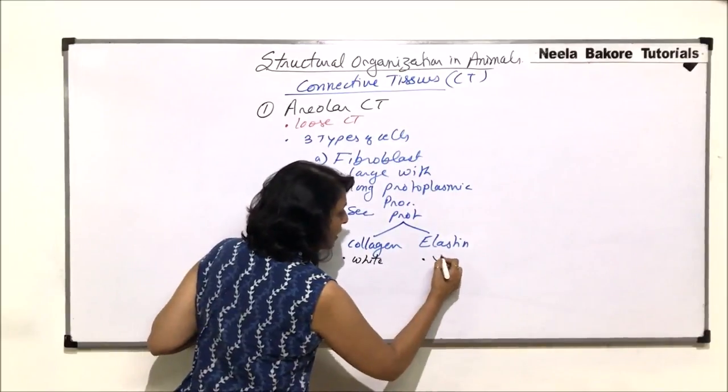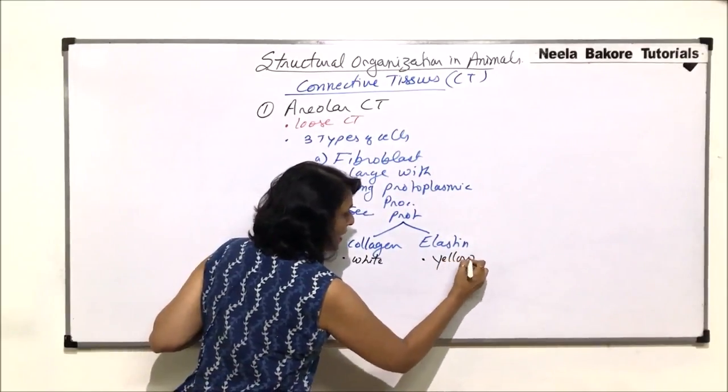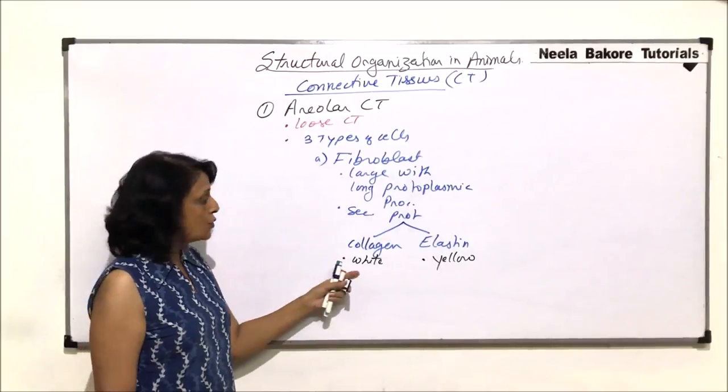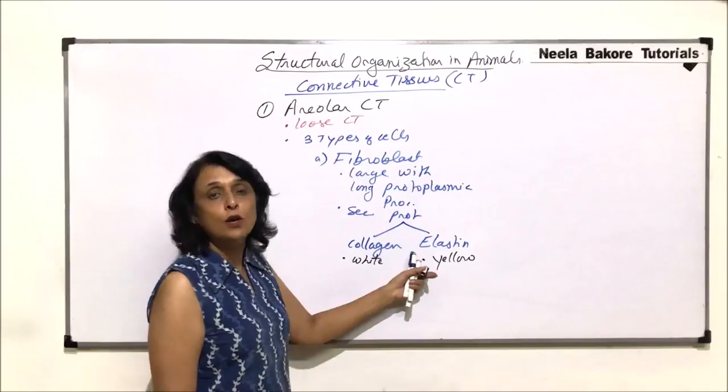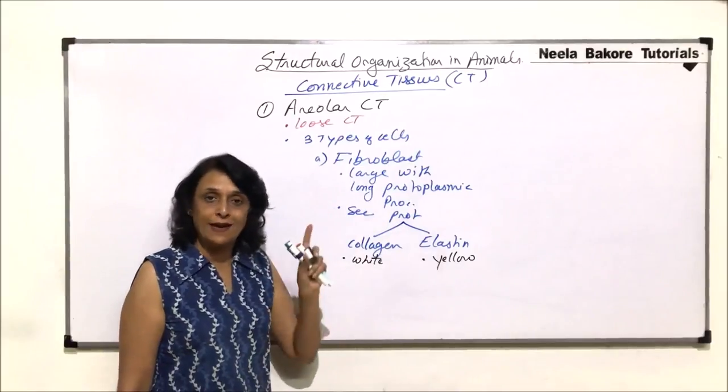Elastin fibers are yellow, so they are also known as yellow fibers. So when we talk of white fibrous tissue, we have more of collagen. When we talk of yellow fibrous tissue, we have more of elastin.